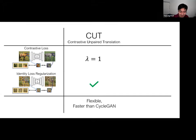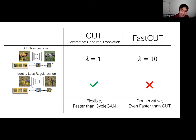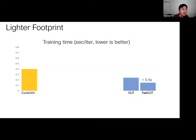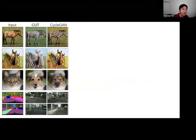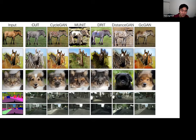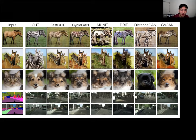Our method can also be made faster by not using identity regularization and using a larger weight on the contrastive loss. Compared to CycleGAN, our training speed is much better than two-sided methods and on par with one-sided methods. Visually, CUT is able to make larger changes than CycleGAN, such as applying larger zebra texture. Fast CUT, due to the larger contrastive loss weight, behaves more conservatively and is more similar to CycleGAN.